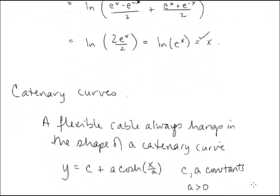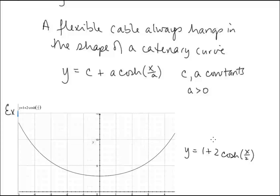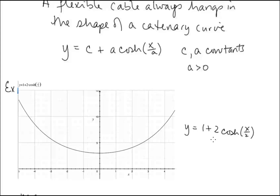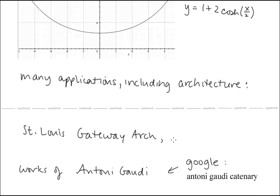One more topic before we finish: catenary curves. A flexible cable always hangs in the shape of a catenary, whose equation has the form y = c + a·cosh(x/a), where c and a are constants and a > 0. While a catenary may look like a parabola, it represents a different relationship between x and y. For example, y = 1 + 2·cosh(x/2). Catenaries have fascinating applications in architecture, including the Gateway Arch in St. Louis and the works of Antoni Gaudí in Barcelona — his hanging models using catenary curves in structural design are worth exploring.